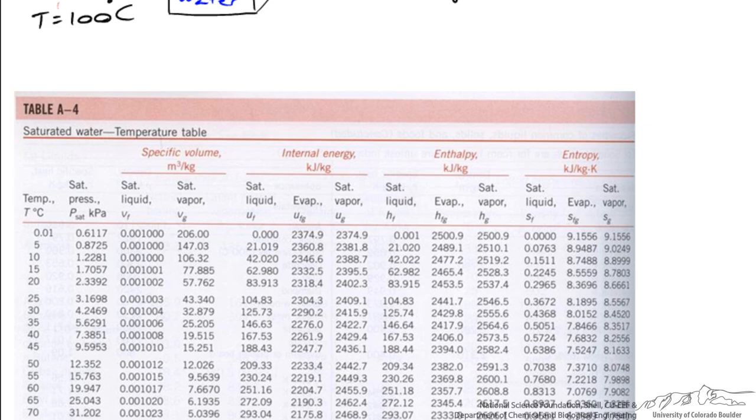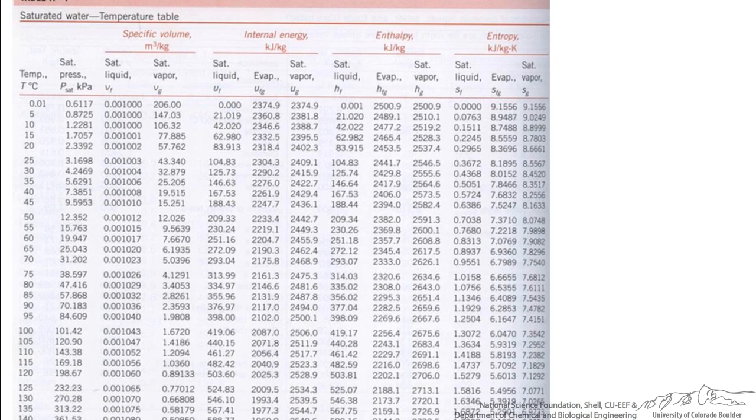This temperature table is organized so that I can look up temperatures real quickly. The first column is temperature, and I see the temperature I'm interested in at 100 degrees C. I look up the saturated pressure, and this is right around one atmosphere of pressure. It gives you more information like specific volume, internal energy, enthalpy, and entropy of the system. But for right now what we're interested in is the specific volume. It gives you two columns: the first is the specific volume of the saturated liquid, and the second is the specific volume of saturated vapor.